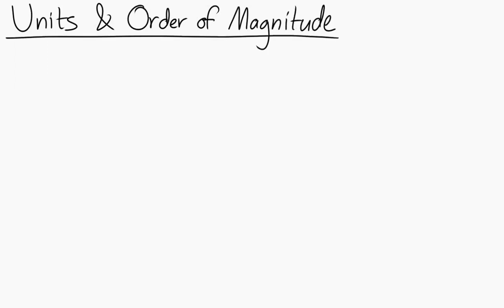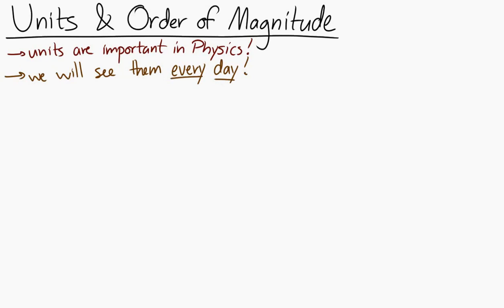Let's take a look at units and order of magnitude. Units in physics are incredibly important. We will see them every day. We can't get away from them. The reason why is because units are needed in order to make sense of the numbers that we see. The numbers that we see won't make sense without units.